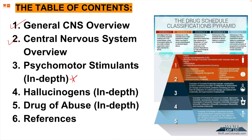This drug schedule classifications pyramid holds five different schedules, representing how severely something needs to be monitored. Schedule five is the most lenient — for example, cough preparations containing no more than 200 milligrams of codeine per 100 milliliters. Schedule one drugs include heroin, LSD, and marijuana. Marijuana is now legal in Canada, yet it remains a schedule one drug — very potent and harmful if misused. It is a drug of abuse, not of use.